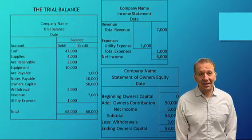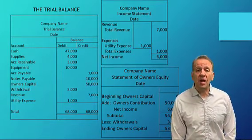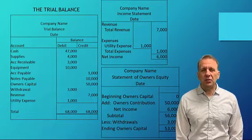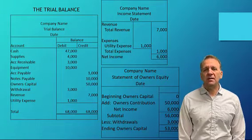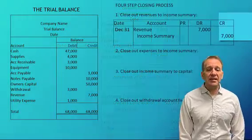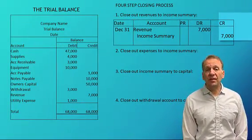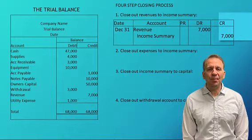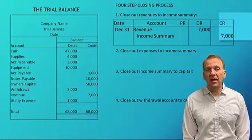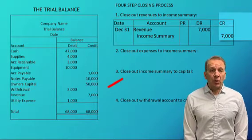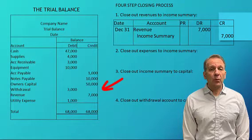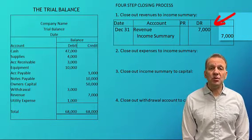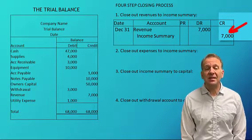Now let's take a look at the closing process. We're going to go through a four-step process with the sole proprietorship. Some textbooks do this differently and I'll try to explain the different ways, but I'm going to start with the four-step process. In step number one, we're going to close out our revenues. This is a sole proprietorship, so we're going to close them out to income summary. Income summary is just a temporary account that we're putting the revenues and expenses in right now and then we'll close it out. The revenue has a credit balance, so to close it we need to debit the revenue — debiting revenue $7,000 and crediting income summary $7,000.